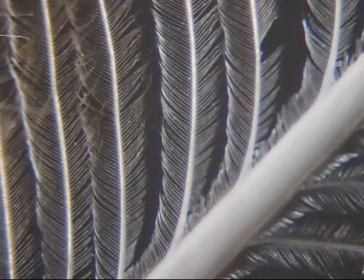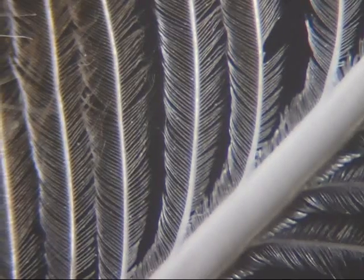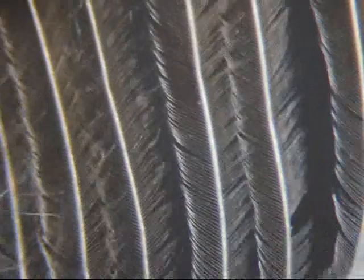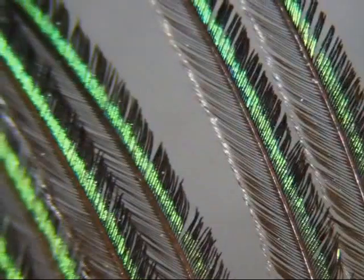Above these thermal insulation barbs are the barbs that start out white and then become colored. Unfortunately, as with other iridescent items, it's difficult to get photos that properly show these colors.